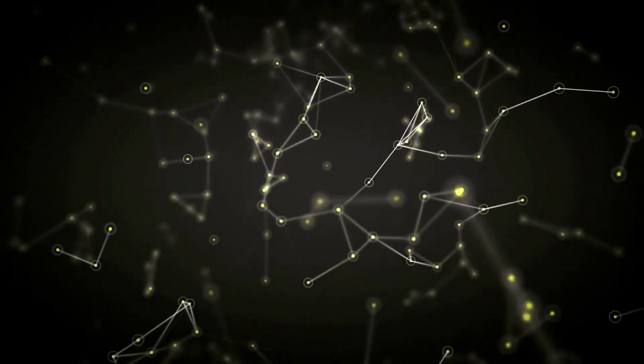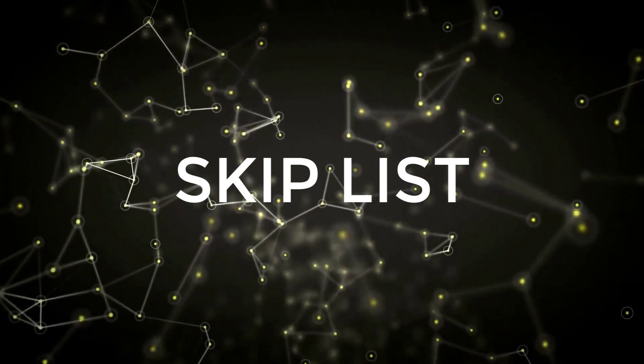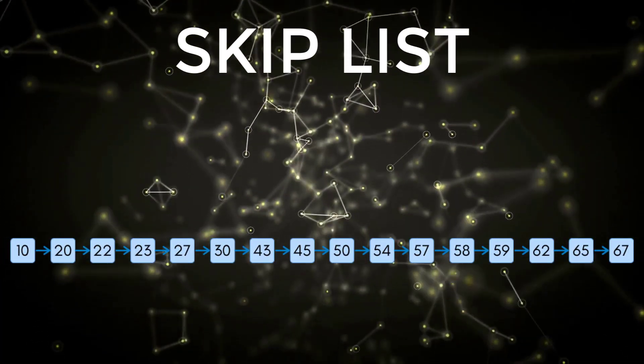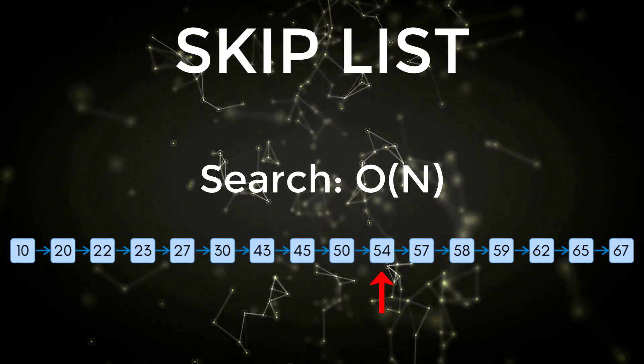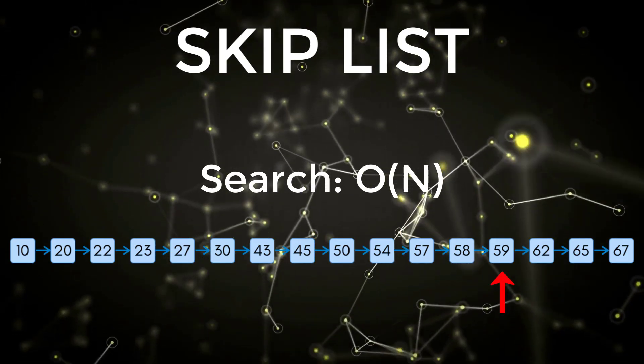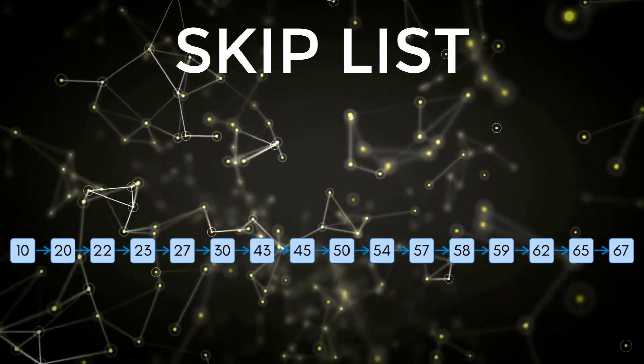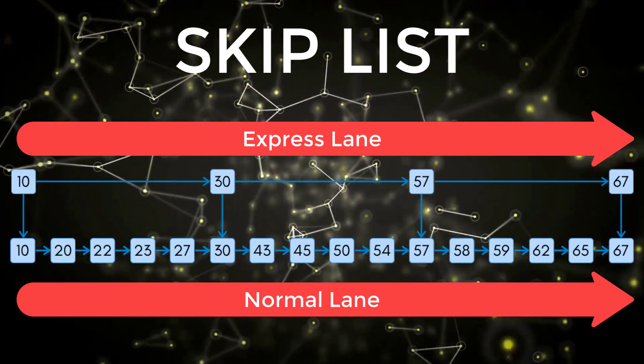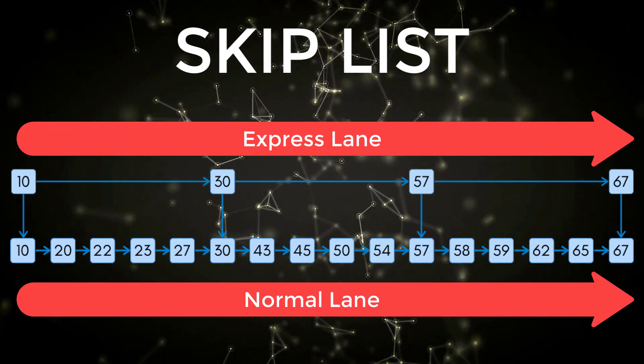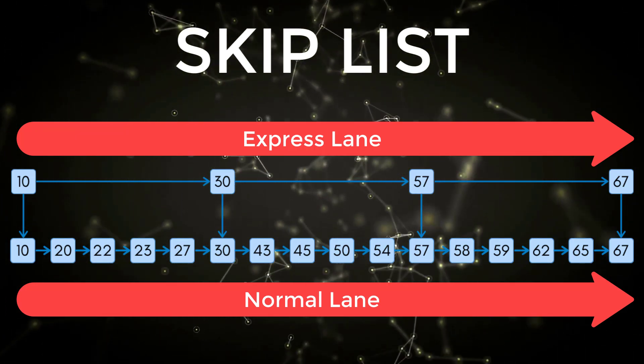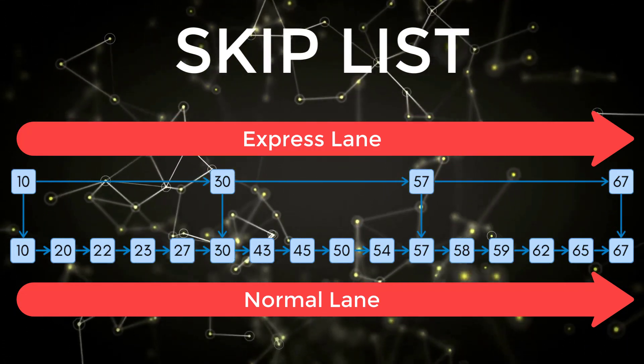The fourth data structure is what's known as a skip list. And this is a faster way to search for nodes inside of linked lists. In a normal linked list, if you wanted to search for a specific node, that would take O of N time where N is the number of nodes. Because in the worst case, you would have to search through every single node. However, in a skip list, you have what's known as an express lane on top of your normal linked list. So you have your normal lane, which has all of the connections to every single node inside of your linked list. And then your express lane is skipping over a bunch of different nodes.